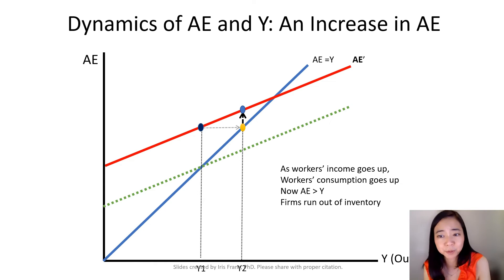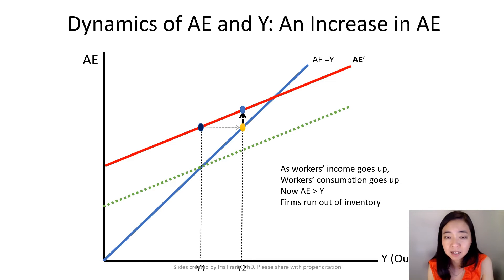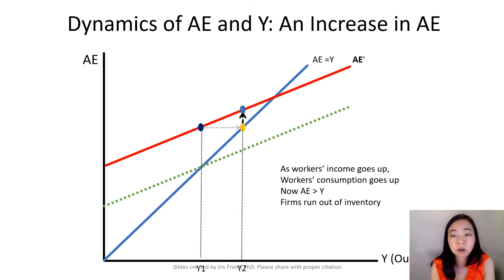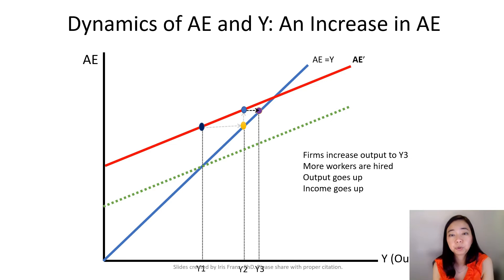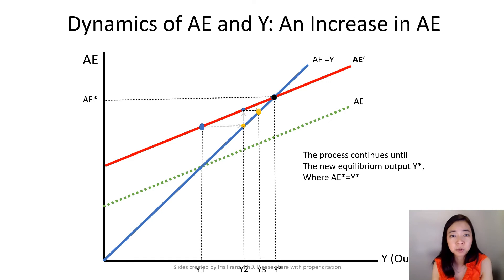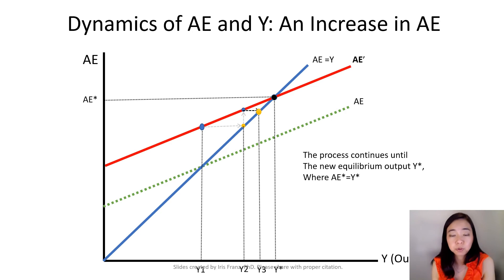Now at this higher navy blue point, we are again out of equilibrium, meaning our aggregate expenditure is higher than our output, meaning firms are running out of inventories again. As firms run out of inventory, they will increase their production from Y2 to Y3, moving from the navy blue point to the purple point. This process will continue until we hit the new equilibrium, where aggregate expenditure AE* is equal to our output Y*, and that's the new equilibrium.